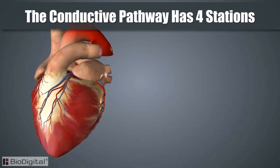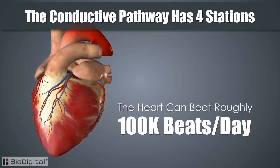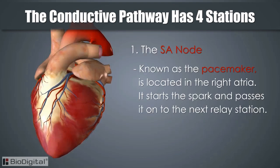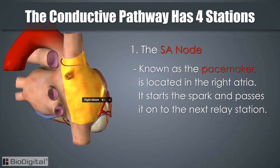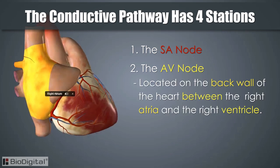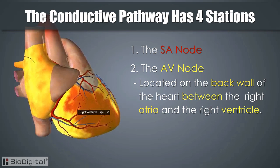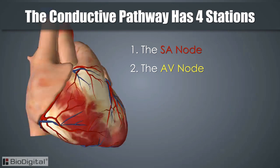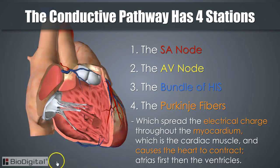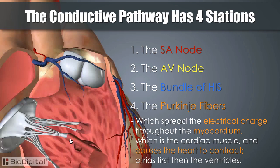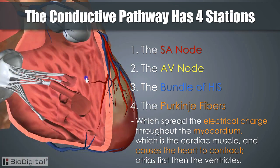The conductive pathway within the heart has four main stations through which it sends electrical impulses, keeping the heart beating roughly one hundred thousand times a day. The first is the SA node, known as the pacemaker, located in the right atria. It passes the spark to the AV node, located on the back wall between the right atria and right ventricle. The spark then passes to the bundle of His, located in the heart septum, and finally to the Purkinje fibers, which spread the electrical charge throughout the myocardium, causing the heart to contract — atria first, then the ventricles.